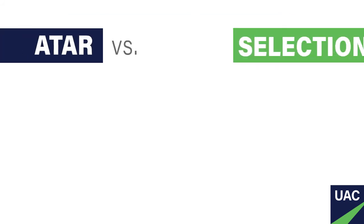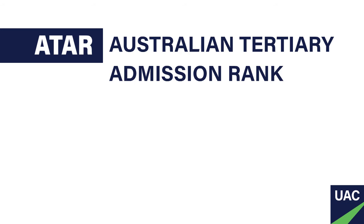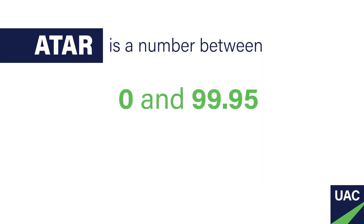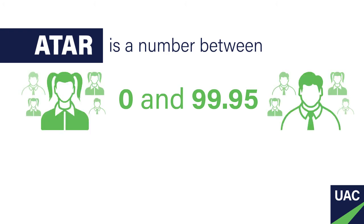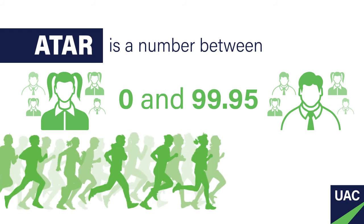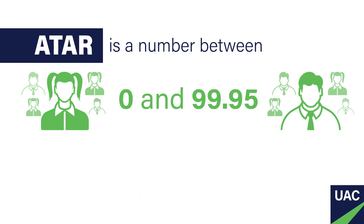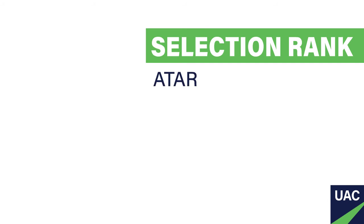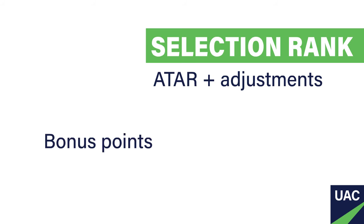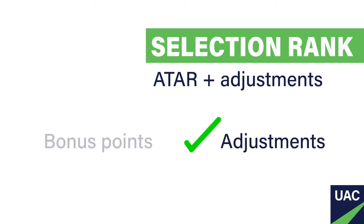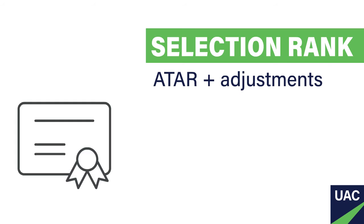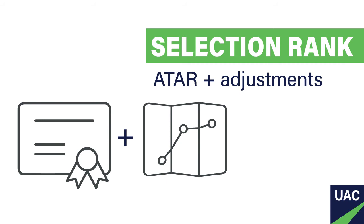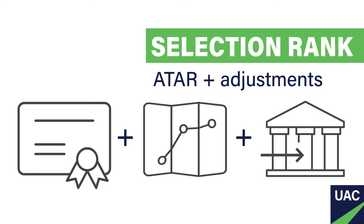Now, ATAR and selection rank — what's the difference? Your ATAR, or Australian Tertiary Admission Rank, is a number between 0 and 99.95, a rank which tells you about how you've gone in the HSC overall compared to other students. Think of it as your place in a race against other HSC students. Your selection rank is your ATAR plus any adjustments made by a university. We used to call these adjustments bonus points, and they're used to increase your selection rank in recognition of, for example, your performance in HSC subjects, the location of your school, or your eligibility for educational access schemes.